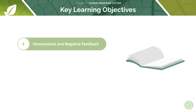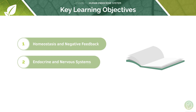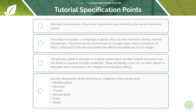In today's tutorial we're going to be looking at the concept of homeostasis and how this involves negative feedback, and we're then going to apply this to the endocrine and nervous systems. A really good example of this is illustrated by the pituitary gland.